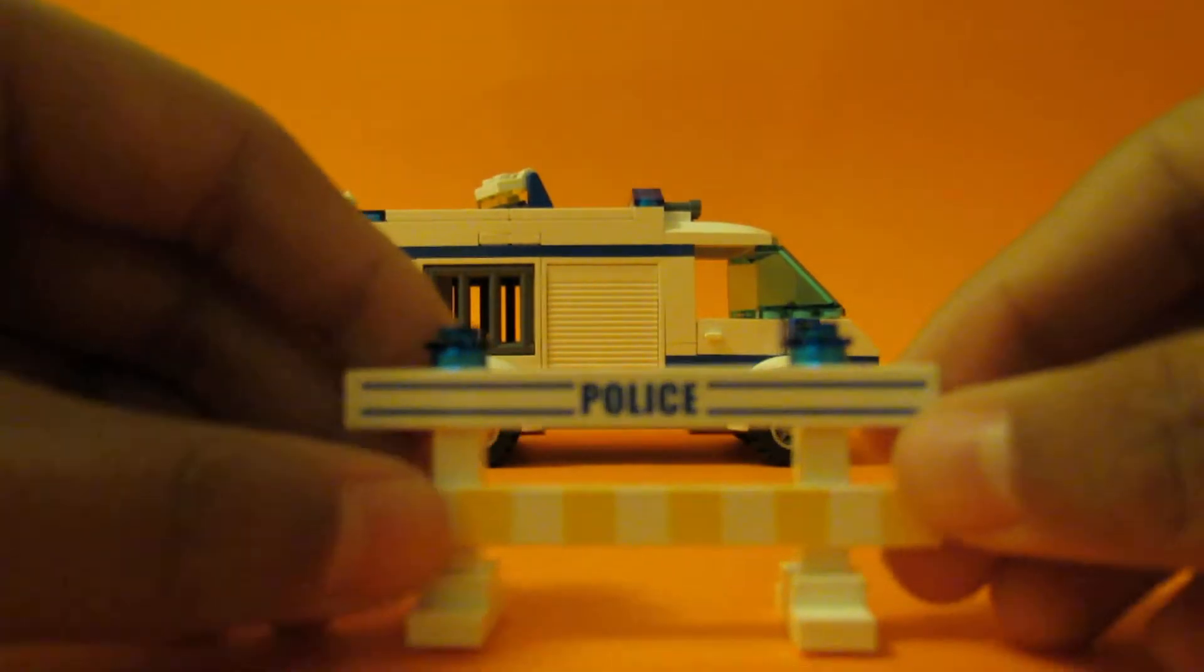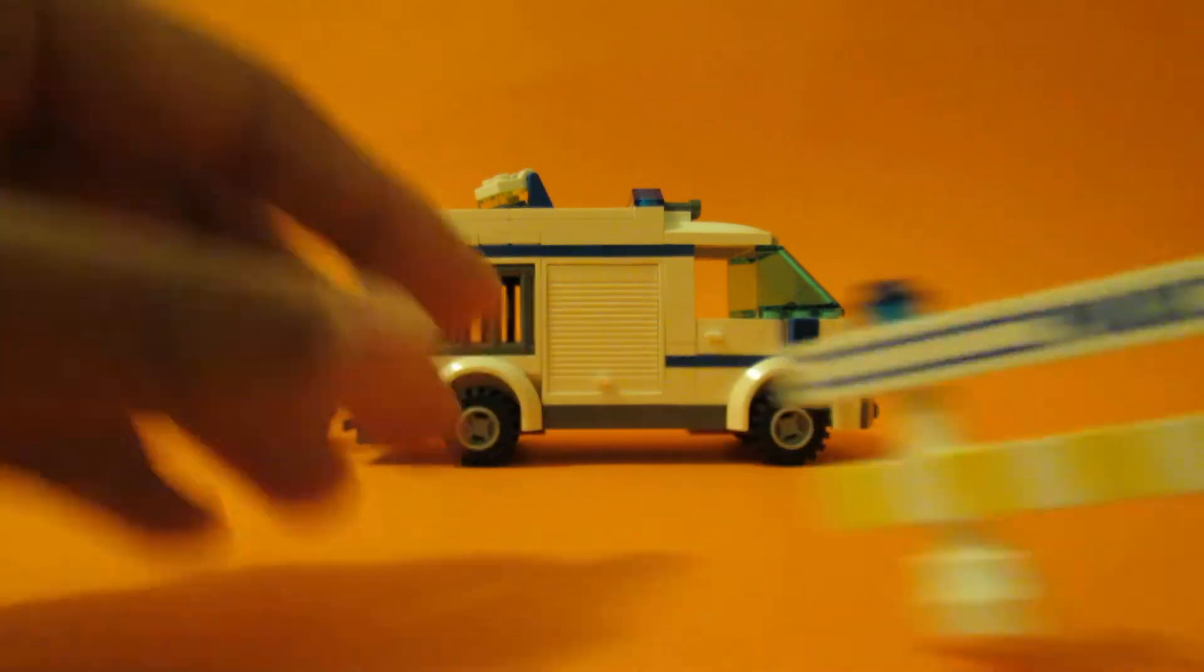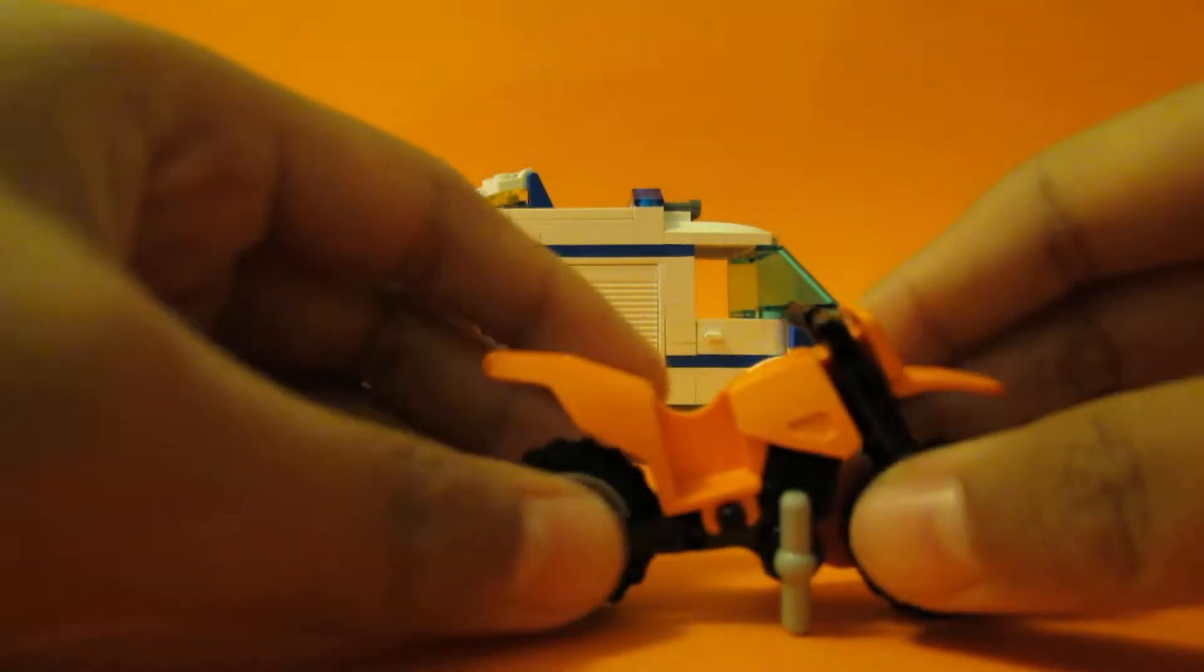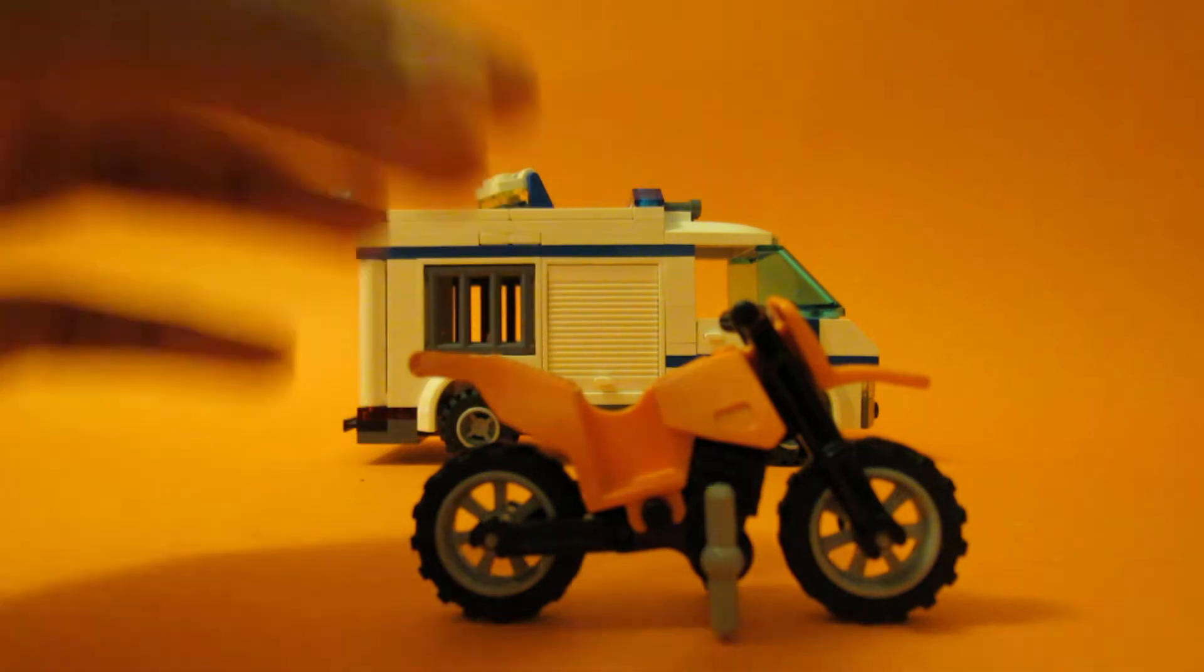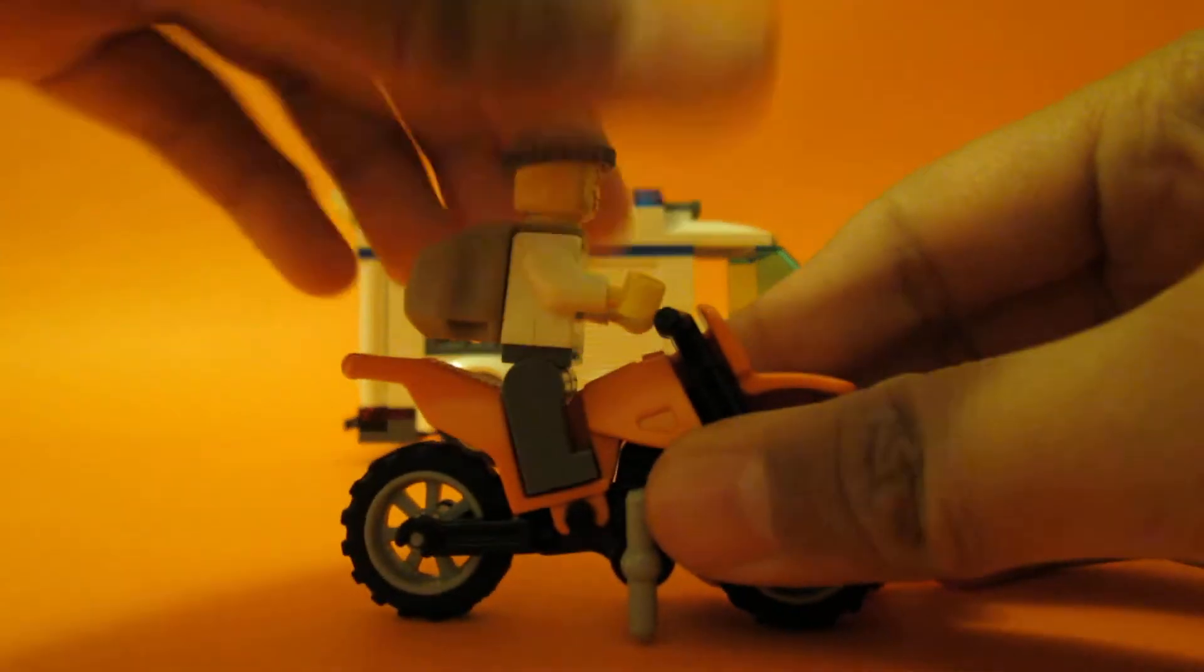Here's the police barricade. Here's the motorbike that the robber goes off on, like this.